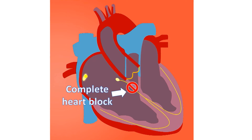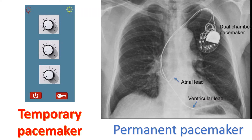Complete heart block needs a temporary or permanent pacemaker depending on whether the disease causing it is reversible or not. When it is caused by a heart attack involving the lower part of the left ventricle, it is usually reversible and needs only a temporary pacemaker. A pacemaker is an electronic device which gives regular electrical pulses to the heart when its own electrical system is defective. A temporary pacemaker is kept outside the body and connected to the heart by lead wires introduced through the veins, while a permanent pacemaker is implanted under the skin in the upper part of the chest and connected to the heart using leads introduced through the veins.